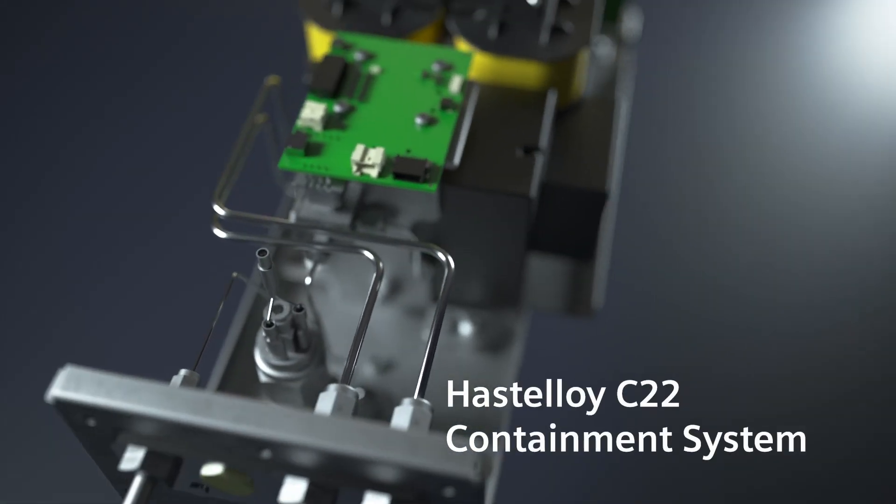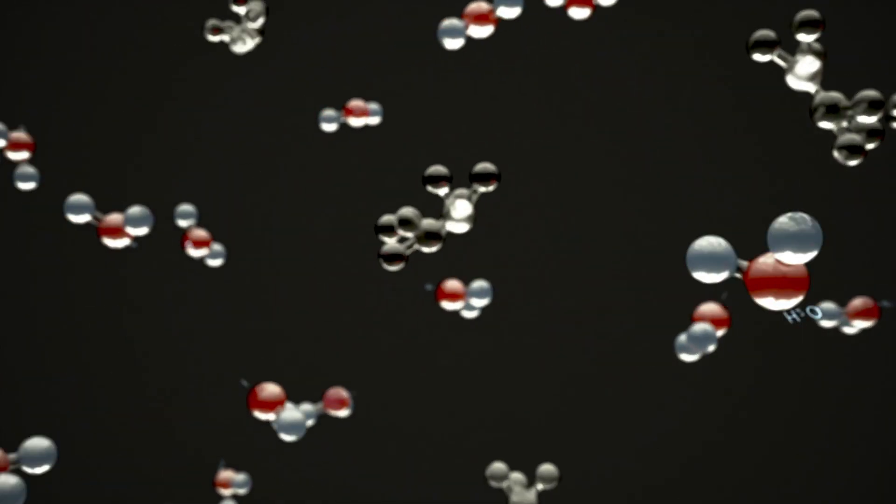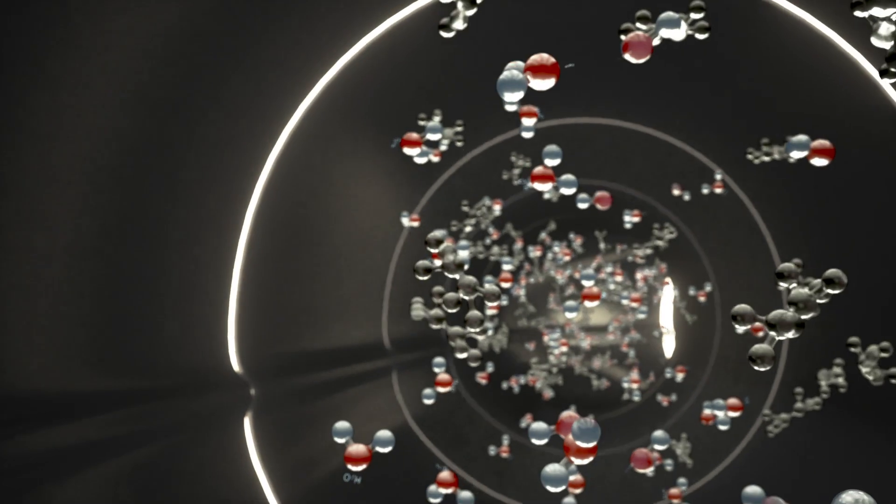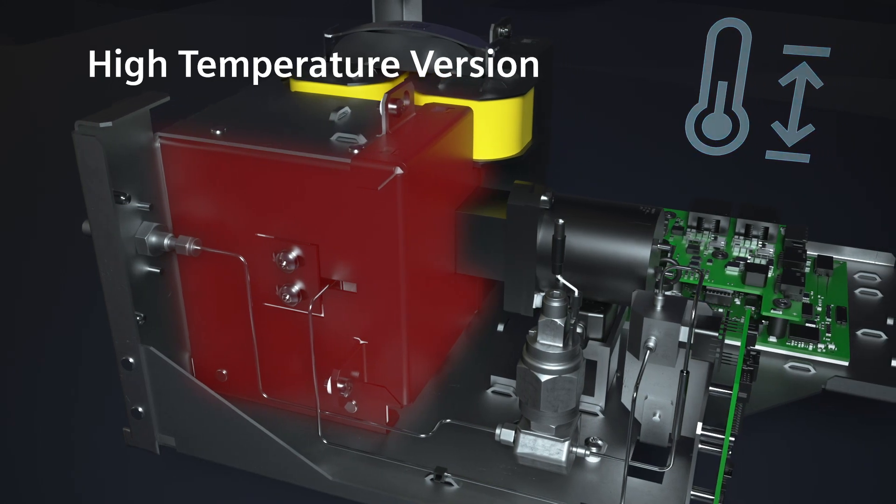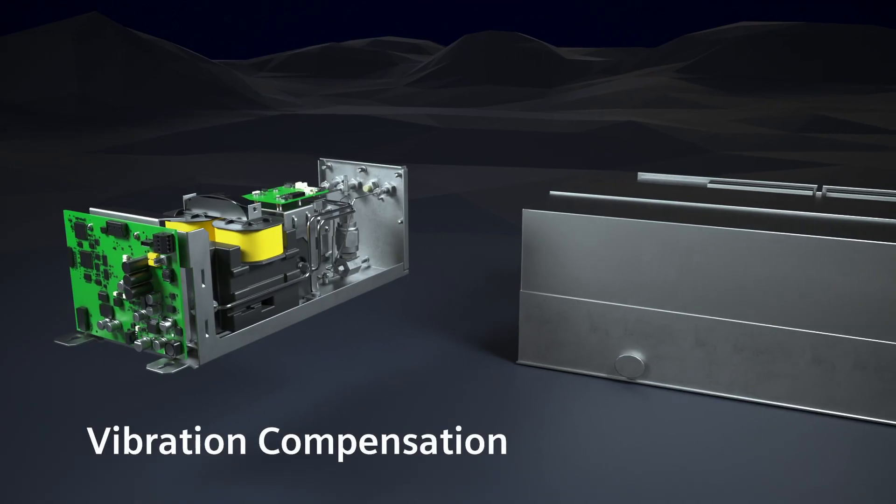Parts that come into contact with the gas optionally can be made from Hastelloy C22. The ability to heat the gas path, as well as vibration compensating measures, improve flexibility even further.